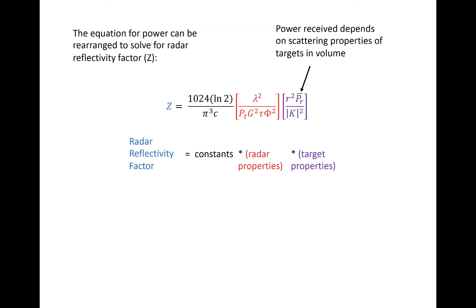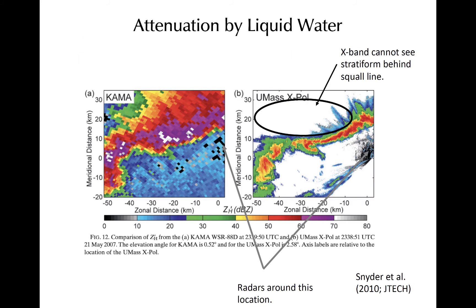Our weather radar equation can then be rearranged to think about how properties of the radar itself, shown in red, and of the target, shown in purple, impact the radar reflectivity factor in blue on the left-hand side of the equation. In this formulation, Z depends on the power received, which is related to the backscatter coefficient of the target, which is itself related to size.